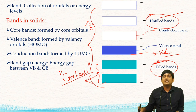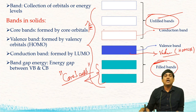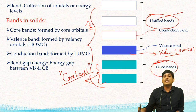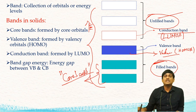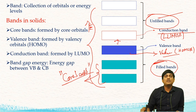Generally, the valency band is a collection of HOMOs — highest occupied molecular orbitals. Among the unfilled bands, the band which is next to the valency band is called the conduction band. This is formed due to LUMOs — lowest unoccupied molecular orbitals. It is a collection of lowest unoccupied molecular orbitals. The energy gap between the valency band and the conduction band is called the band gap energy, which decides the nature of the solid.